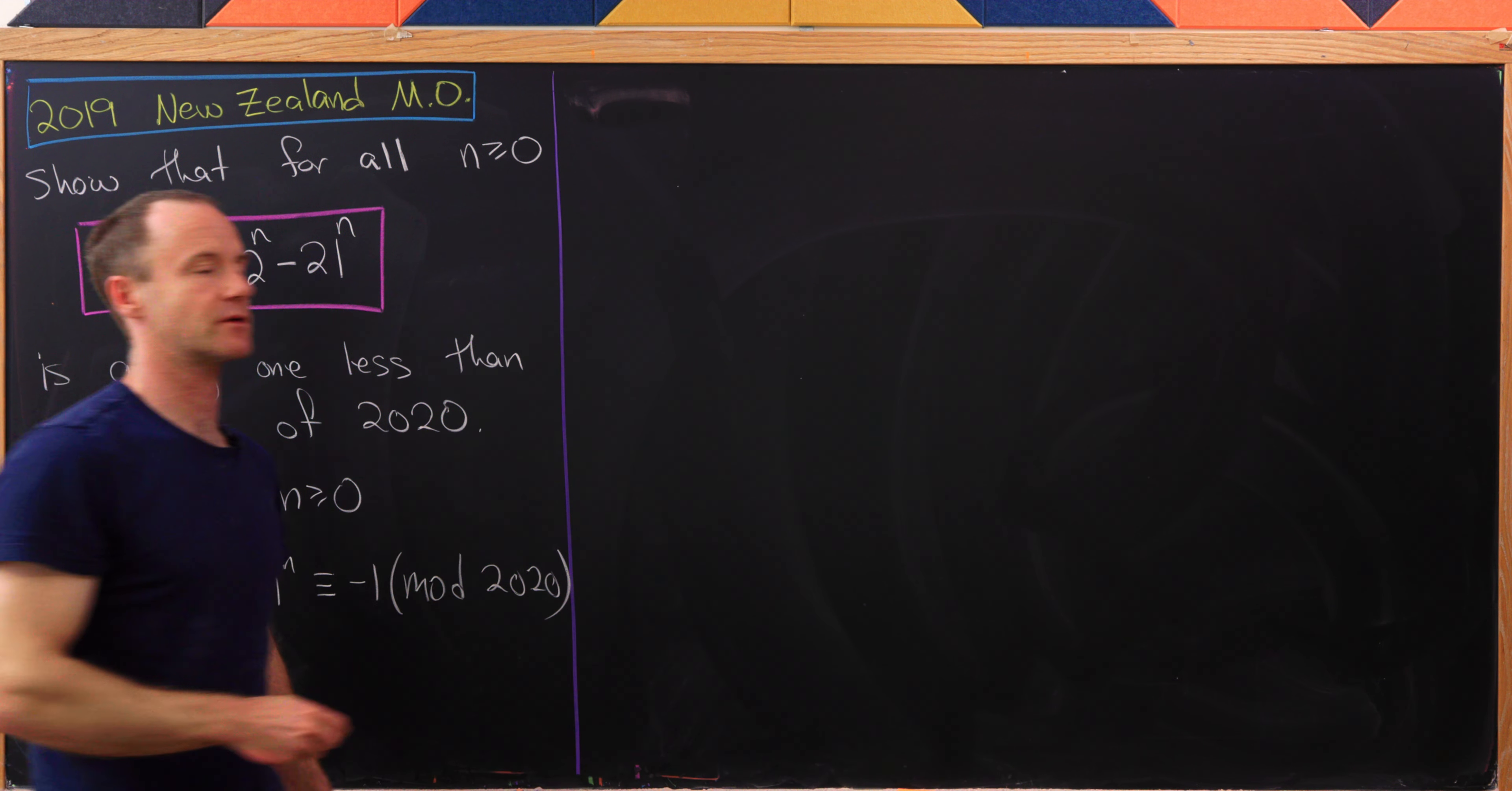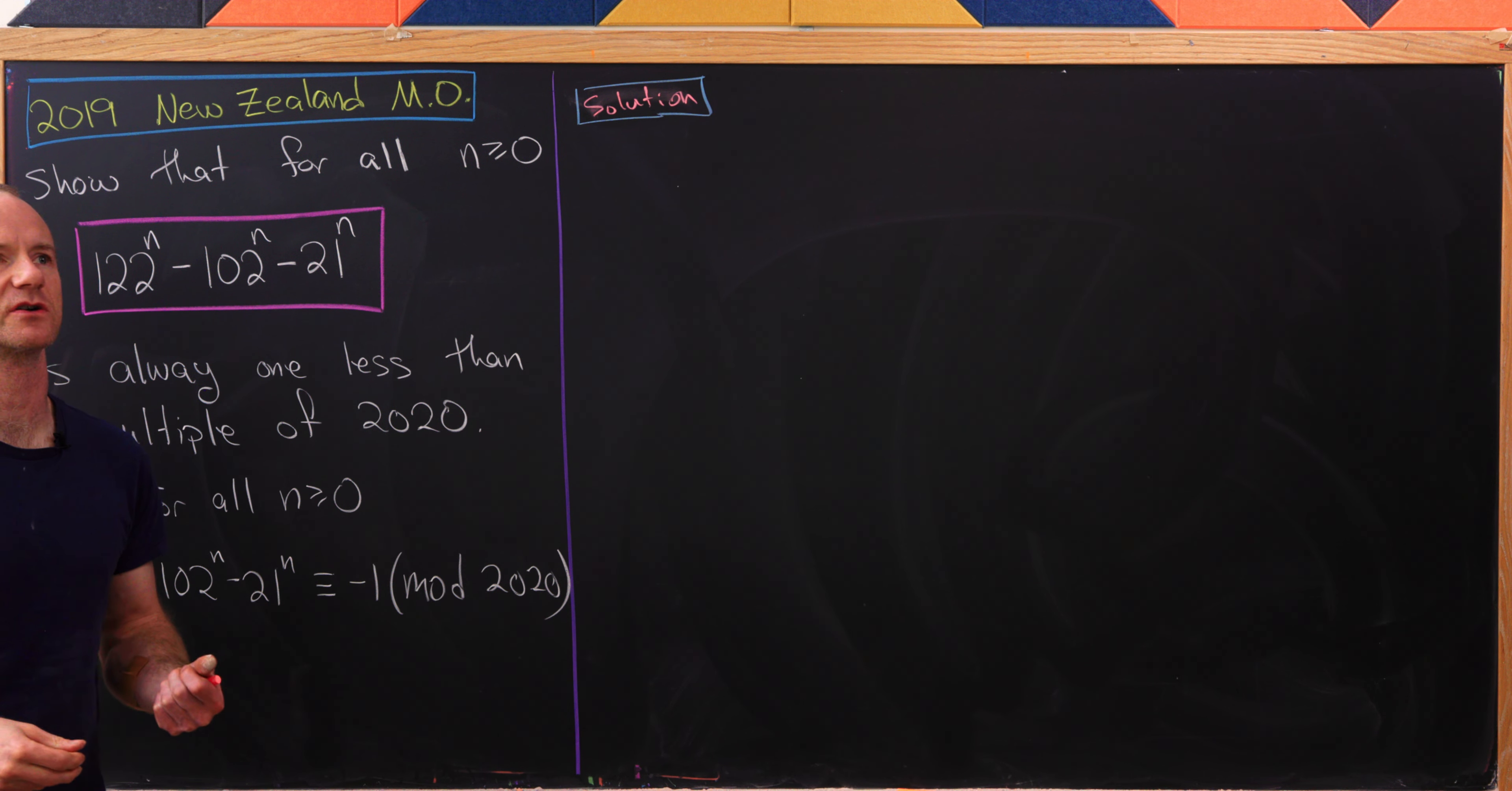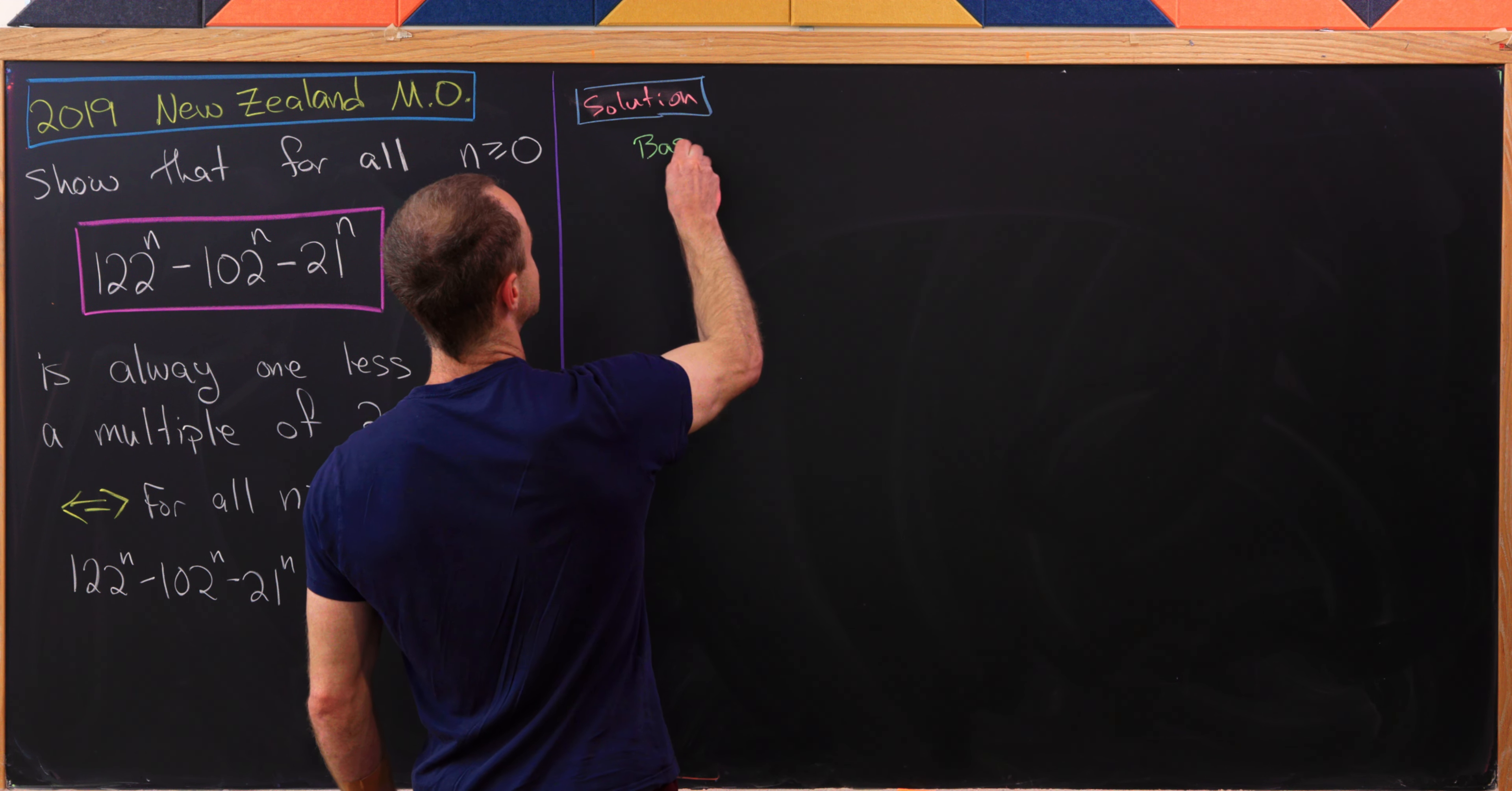And now let's jump into our solution, which will be done via a proof by induction. That's one of the nice boxes that this ticks in terms of looking at lots of different problem-solving strategies. So whenever you do a proof by induction, you have to do a base case, which is like the smallest possible setup. I think the obvious base case here would be the case when n is equal to 0.